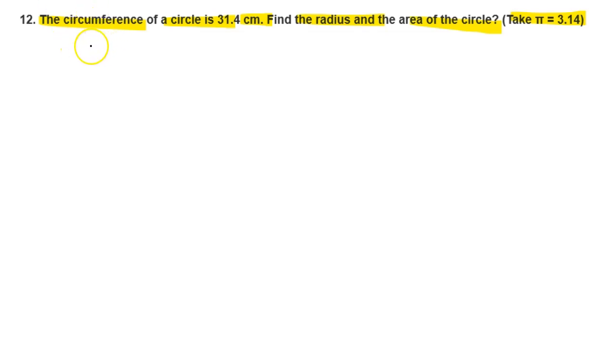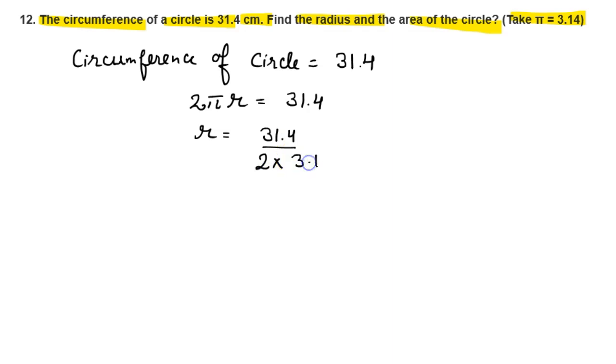So the circumference is given. Circumference of circle equals 31.4 cm. The formula of circumference of circle is 2πr = 31.4, and r = 31.4 divided by 2 into π. When we remove the decimal point, we have 100 divided by 10, which gives 5 cm.